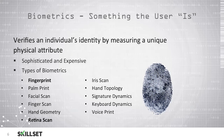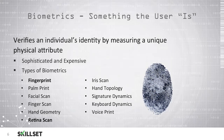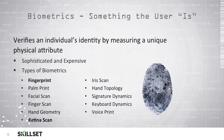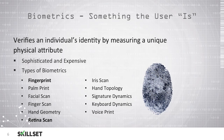For example, if a user every day enters their password one character at a time very slowly because they are not a very good typist, and then another day the password is entered very rapidly, this would trigger an alert with keyboard dynamics indicating that it may not be the same person entering the password, even though the password is correct. We can also use voice print technology to listen to an individual's voice and those distinguishing characteristics in order to determine if they are the appropriate user and whether or not access should be granted.